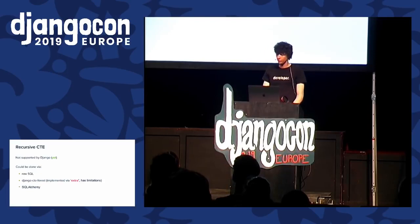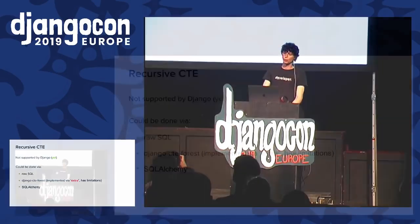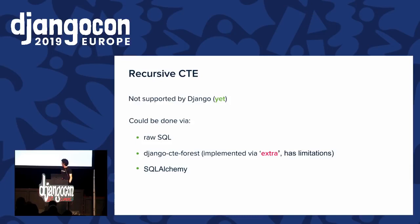Recursive common table expressions are also not supported by Django yet. They're useful when you work with rows that have a parent_id pointing to another row, and you want to traverse them all and perform aggregations. Currently you can do it with raw SQL or SQLAlchemy. There's a library called Django MPTT, but it uses extra(), which is going to be deprecated — so that library is not recommended currently.